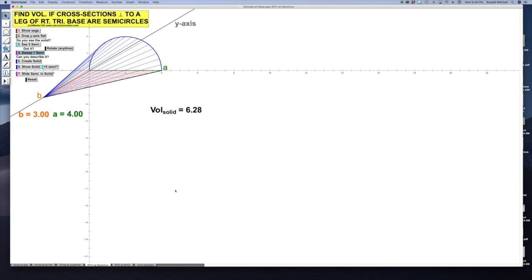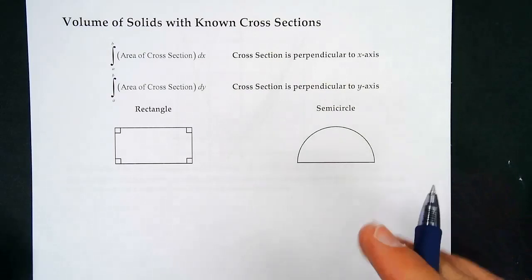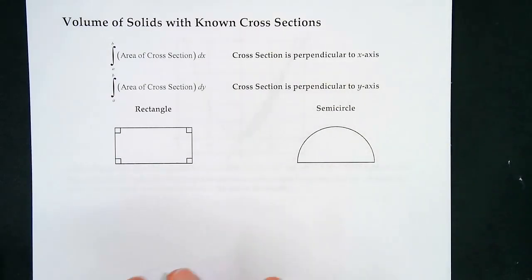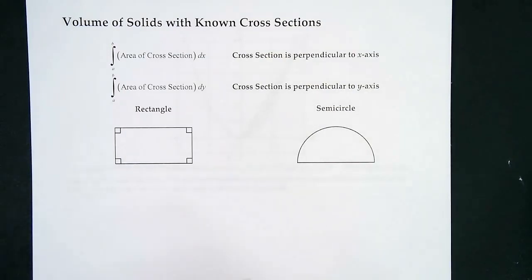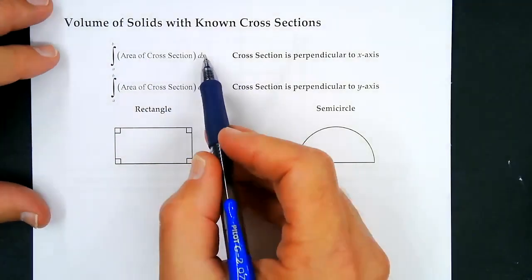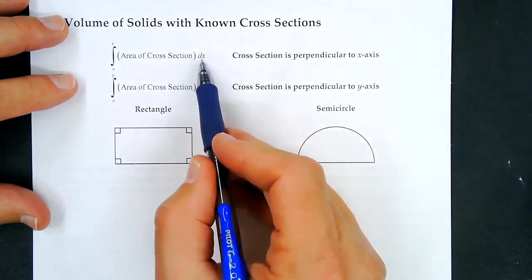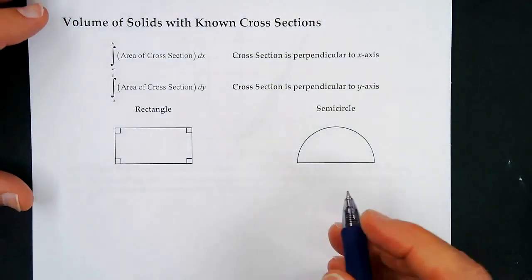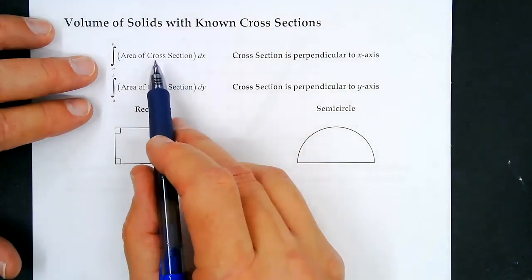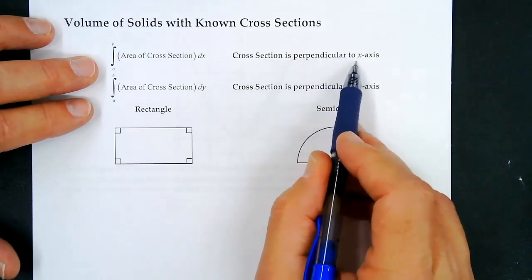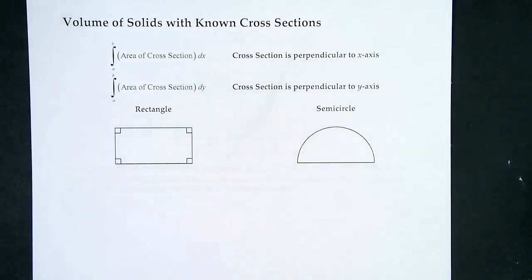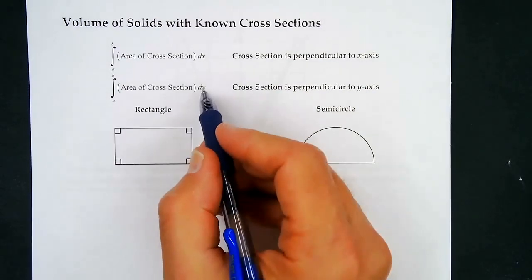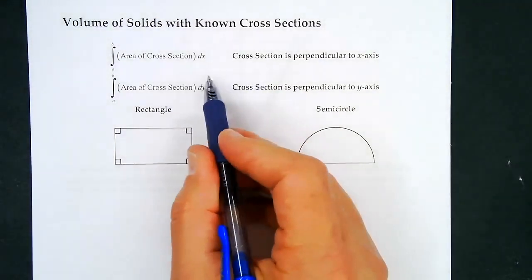Let's review some area formulas we're going to need. As you saw from the animation, we're going to take volumes of solids when we know the type of shape the cross-section area is. We find the area of the cross-section, and it's going to have a thickness, which gives us the volume. The integral formula looks like this if the cross-sections are perpendicular to the x-axis. If perpendicular to the y-axis, we need x-equals equations and the thickness is dy.